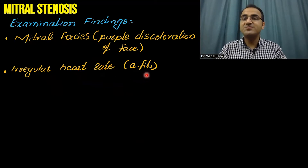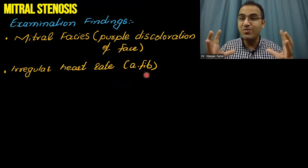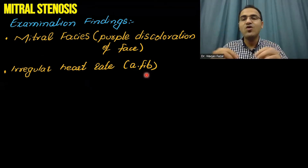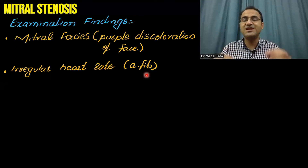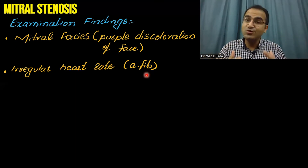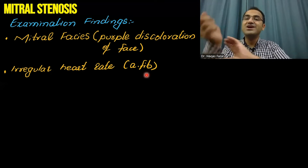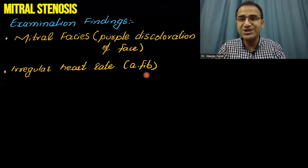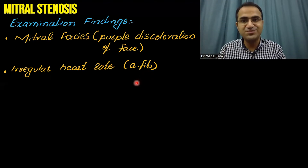Irregular heart rate: in the left atrium there is enlargement and deformity due to increased size. Whenever there is change in shape or deformity of the heart muscle, there are chances of arrhythmias to originate. Therefore, there are huge chances that the patient will develop atrial fibrillation and have an irregular heart rate. I have talked about atrial fibrillation in detail in my video on atrial fibrillation — the link is in the description.